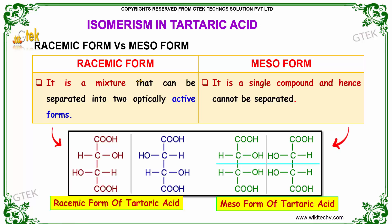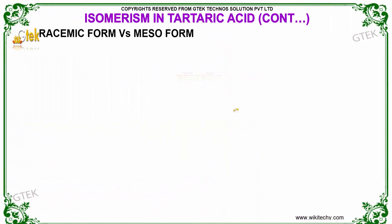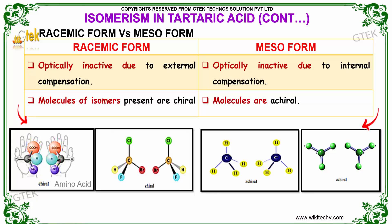Racemic form is a mixture that can be separated into two optically active forms, whereas meso is a single compound and hence cannot be separated. Racemic form is optically inactive due to external compensation, whereas in the meso form, internal compensation occurs, so they are also optically inactive.